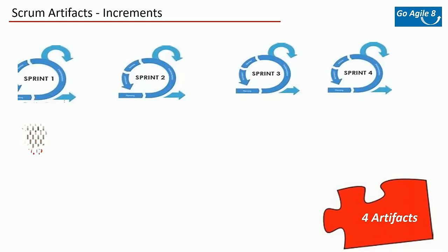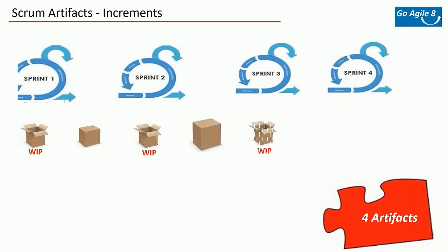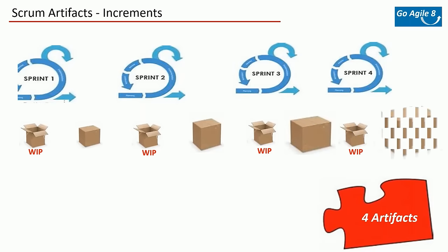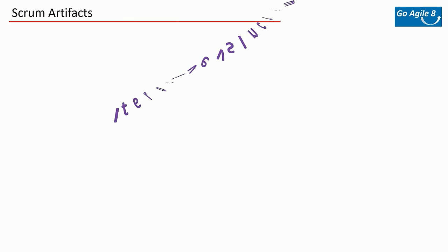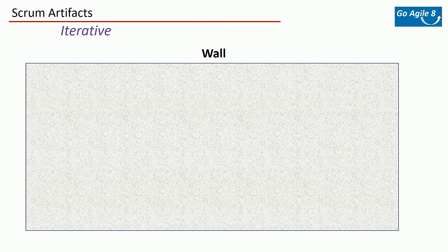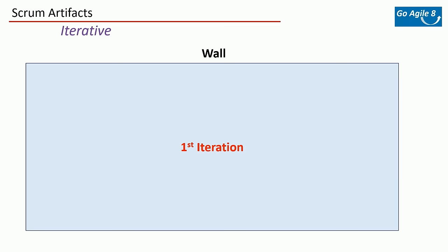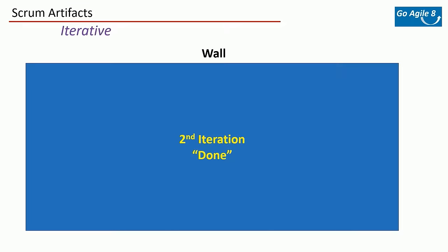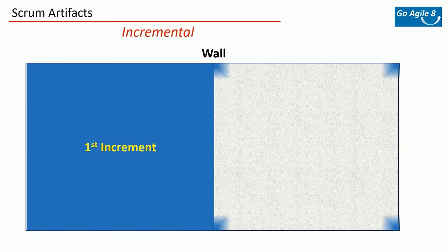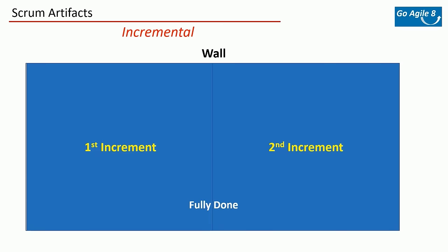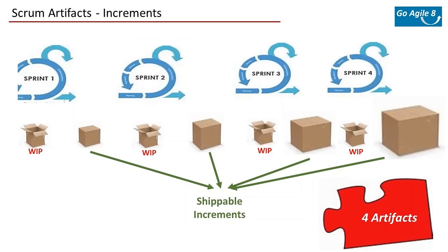The third artifact is the Increment — the sum of all product backlog items completed during a sprint, combined with the increments of all previous sprints. Scrum uses a combination of iterative and incremental approaches. To understand the difference: in an iterative world you paint a complete wall with one coat, then come back next week for a second coat. In an incremental world, you paint both coats fully on half the wall the first week — that half is a finished increment — then complete the other half the next week.